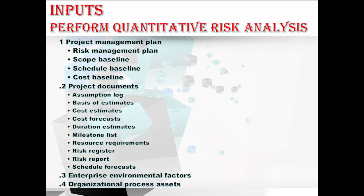Resource requirements provide the starting point from which the variability is evaluated. The risk register contains the details of individual project risk to be used as input for quantitative risk analysis. The risk report describes the sources of overall project risk and the current overall project risk status. The schedule forecast may be compared to the results of a quantitative schedule risk analysis to determine the confidence level associated with achieving these targets.